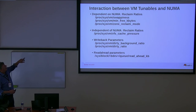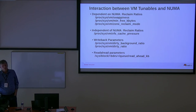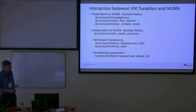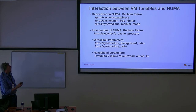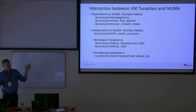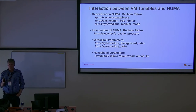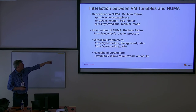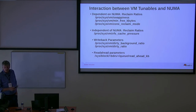The VM tunables most commonly adjusted in tuning profiles are: the NUMA-dependent ones — swappiness, min_free_kbytes, and zone_reclaim_mode — and the system-wide ones — cache pressure, dirty background ratio, and read-ahead. These are the ones you're most likely to need to adjust if you want to fine-tune the system. These parameters will eventually move into v2 C groups, particularly dirty background ratio.